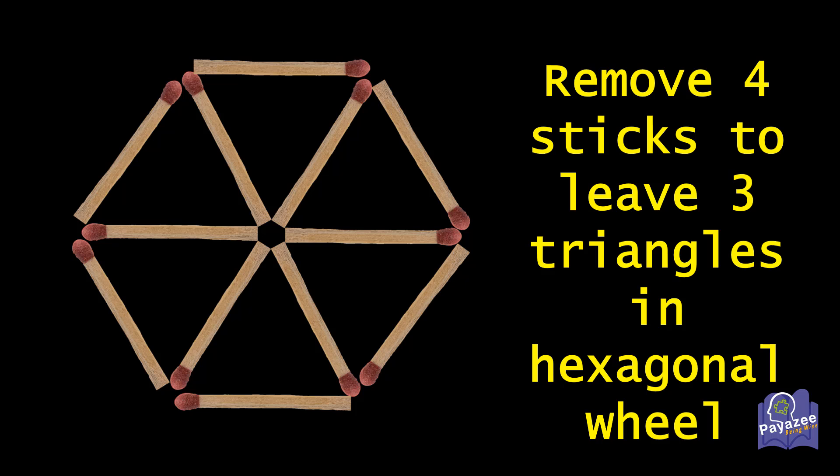So coming back to our original hexagon wheel, we have 1 common stick between 2 triangles and the 3rd triangle should be independent here. By concept of common match stick, each common match stick will reduce the number of sticks needed to form the independent triangle by 1.